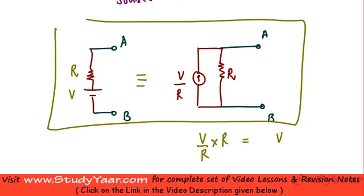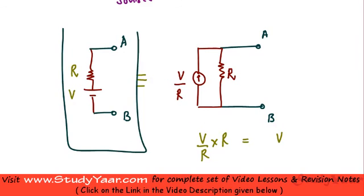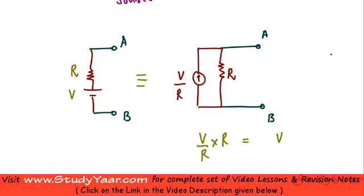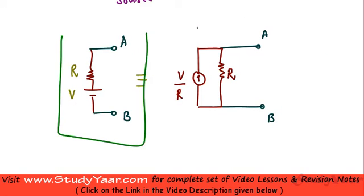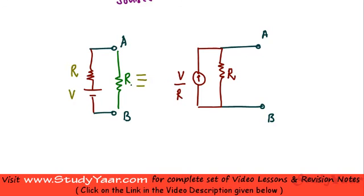Basically these two circuit parts are equivalent. Anywhere you see this you can replace it with this, and anywhere you see this you can replace it with this. When I say these two are equivalent, it means the voltage across AB should be the same. And if I were to connect a resistance R1 across AB, then the current flowing through R1 should be the same in both cases.